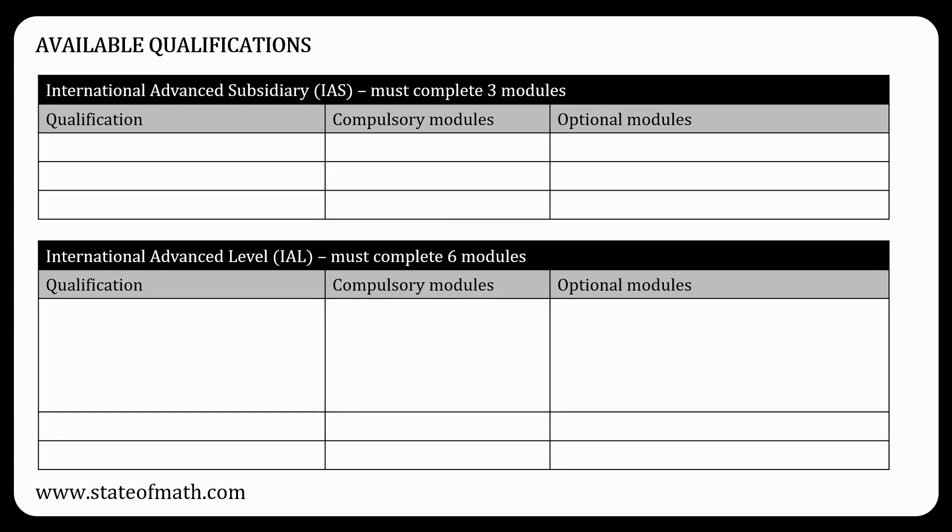There are two types of qualifications: the International Advanced Subsidiary, or IAS, which is basically half an A-level. To gain this, you'll need to complete three modules.